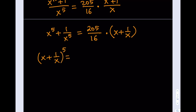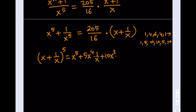In Pascal's triangle, row number 5, our coefficients are 1, 4, 6, 4, 1 for row 4, and 1, 5, 10, 10, 5, 1 for row 5. Using those coefficients to expand this, I get x to the 5th plus 5x to the 4th times 1 over x, plus 10x cubed times 1 over x squared, plus 10x squared times 1 over x cubed, plus 5x times 1 over x to the 4th, plus 1 over x to the 5th.